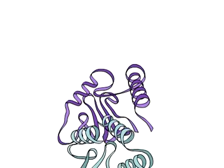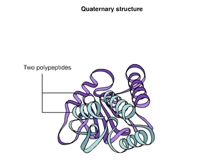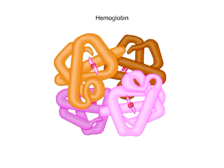Some proteins consist of two or more polypeptide chains. The fourth level of protein structure, quaternary structure, results from the combination of two or more polypeptide subunits. Quaternary structure is stabilized by the same sorts of attractions that stabilize tertiary structure.